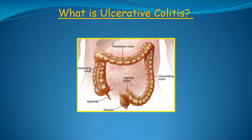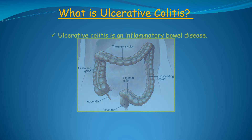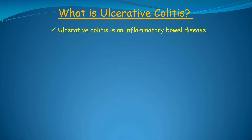Before we can explain what the evidence indicates is the cause of ulcerative colitis, the first question we need to answer is, what is ulcerative colitis? Ulcerative colitis is an inflammatory bowel disease, which means that large numbers of white blood cells called neutrophils have moved into the colon or large intestine, where they release chemicals causing tissue damage and inflammation.